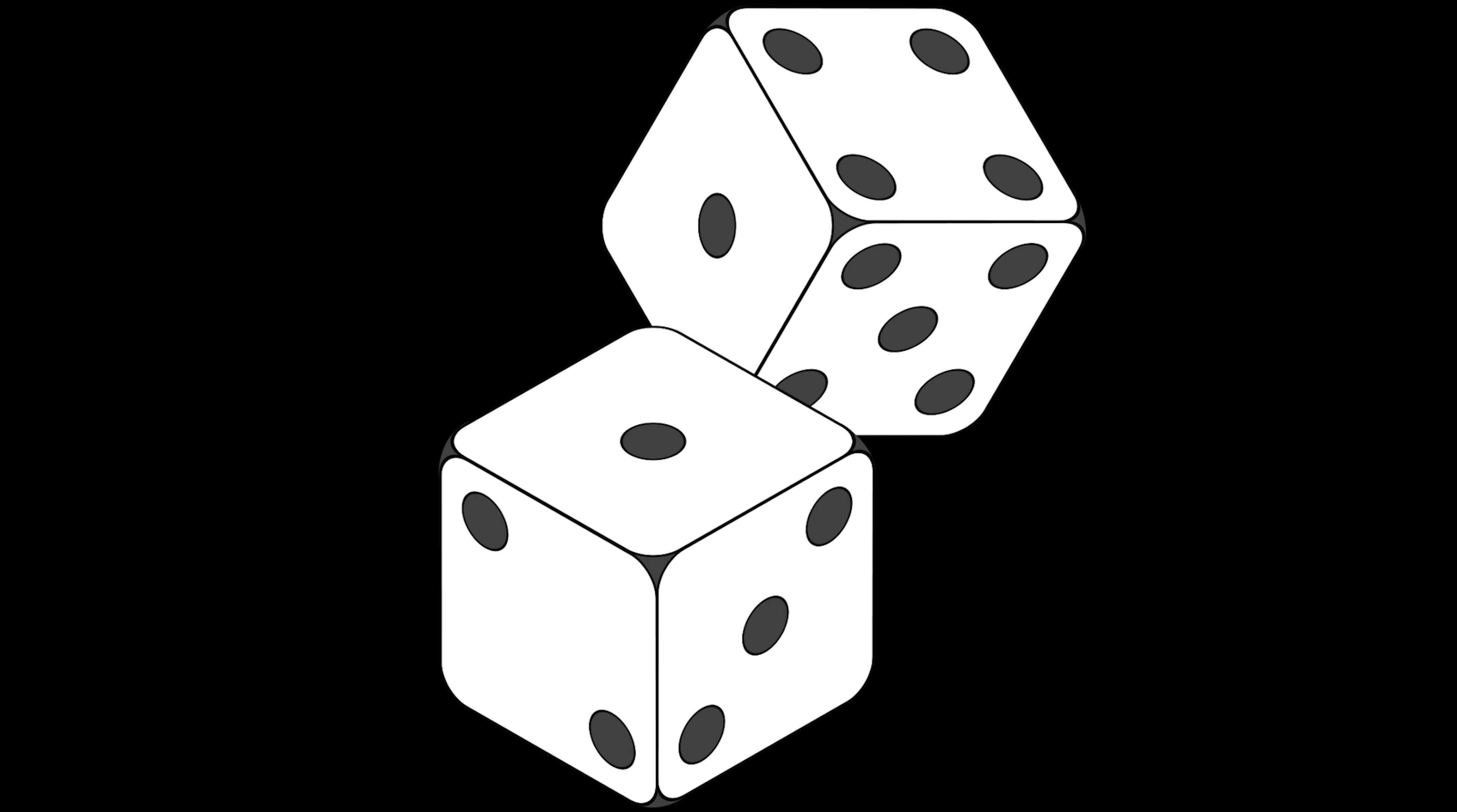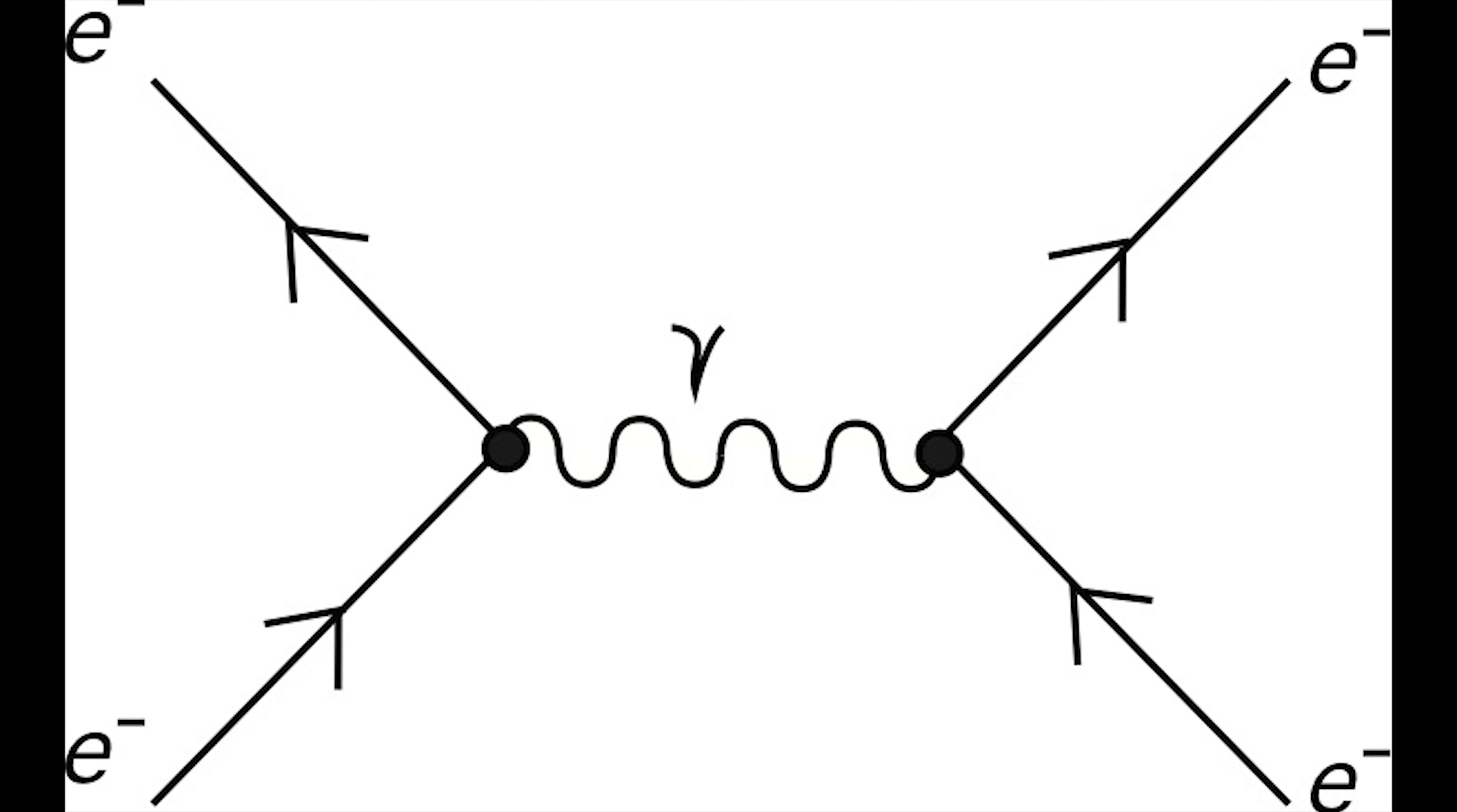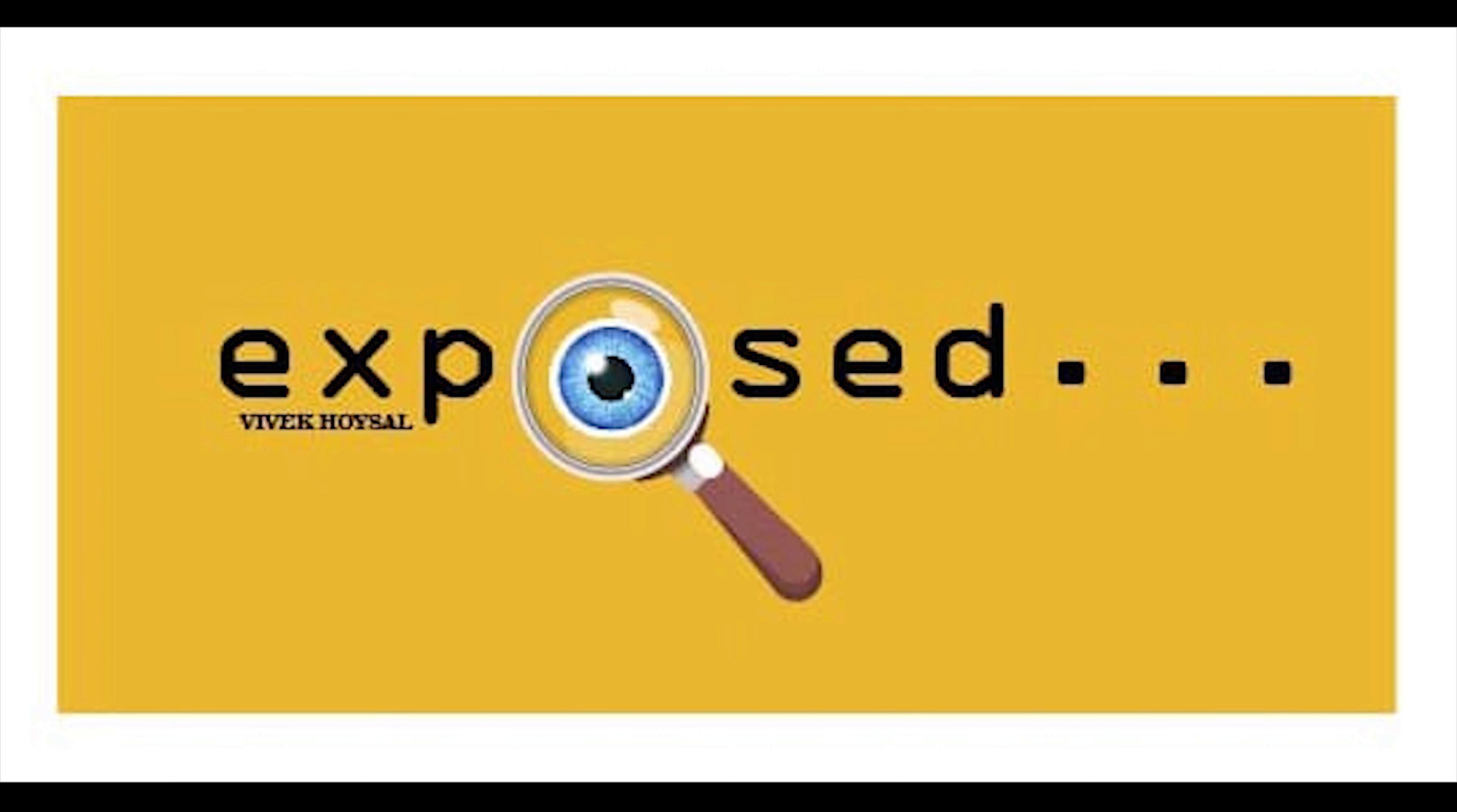This is how almost all the calculations are done while calculating the probability of an event. This is also the basis of Feynman diagrams. With this, I will end this short video. I am Vivek and this is Exposed. Peace out.